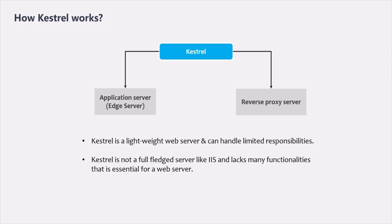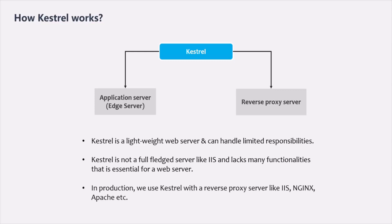When the application is in production, the number of requests will be huge and the server will have to perform tasks like load balancing and port sharing — which Kestrel cannot do alone. So in production, we use Kestrel together with a reverse proxy server that provides the extra functionality Kestrel lacks. The request is still processed by Kestrel, and the response is also constructed and sent by Kestrel.